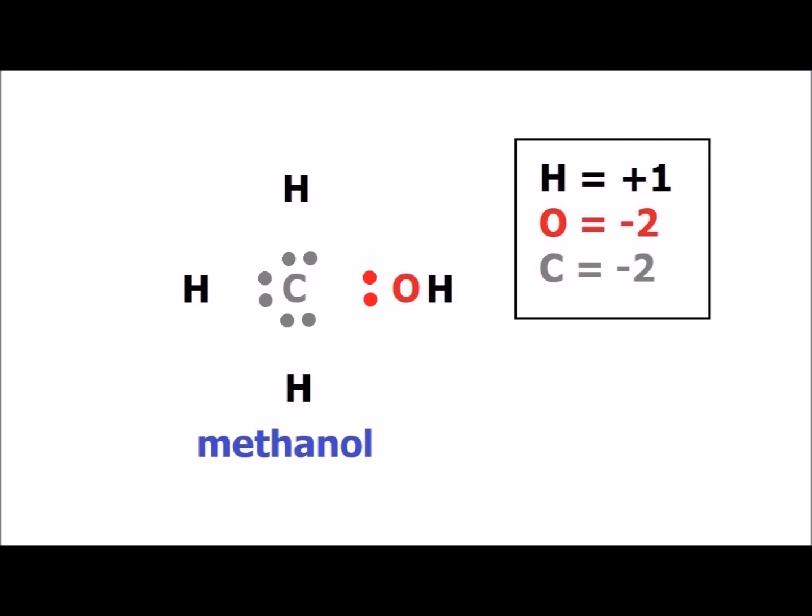Because oxygen is far more electronegative than carbon, the two electrons involved in the carbon-oxygen bond are colored red and located closer to oxygen. The other six electrons, being in carbon-hydrogen bonds where carbon is more electronegative than hydrogen, are colored gray and shown as being closer to the carbon atom. Since carbon starts with 4 electrons and now has 6, it has effectively picked up a minus 2 charge, so we can rationalize it having an oxidation number of minus 2.